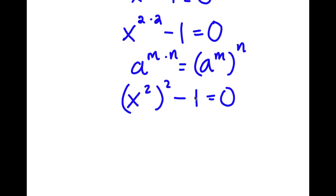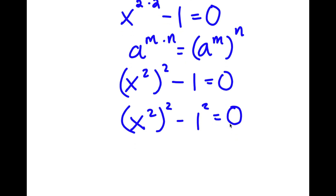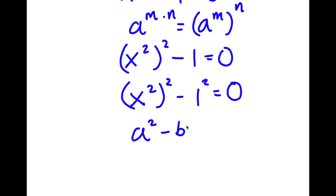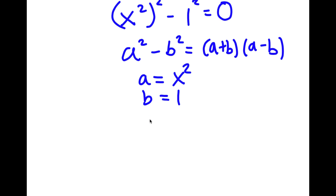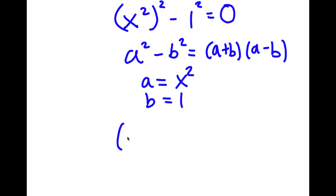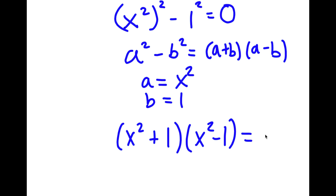Now 1 is the same thing as 1 squared. So I have x squared to the power of 2 minus 1 squared is equal to 0. If I have something in the form a squared minus b squared, this is equal to a plus b times a minus b. So in this case, a is x squared and b is 1. So I have x squared plus 1 times x squared minus 1 is equal to 0.